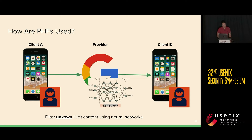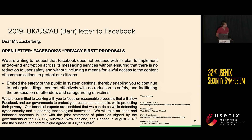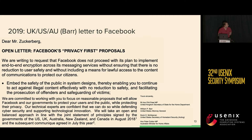This works all fine until we want to introduce an end-to-end encrypted setting — in other words, what if we don't want the provider to be able to see the image we want to send to client B? Now there's a problem because the provider can't scan the image to check if it's illicit content. This was actually a problem that came up back in 2019 when the US Attorney General William Barr co-signed with a few leaders from the UK and Australia, and they wrote a letter to Facebook imploring that they delay the use of end-to-end encryption, fearing for the safety of users because it would remove these illicit content scanning capabilities.